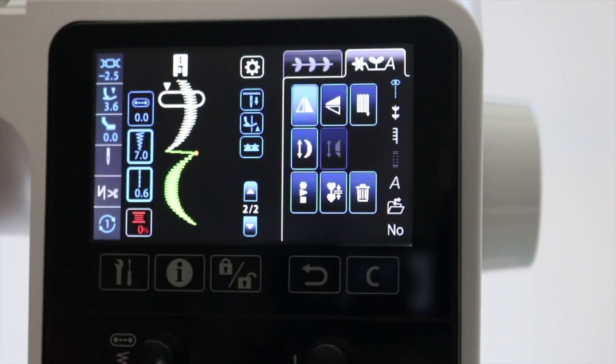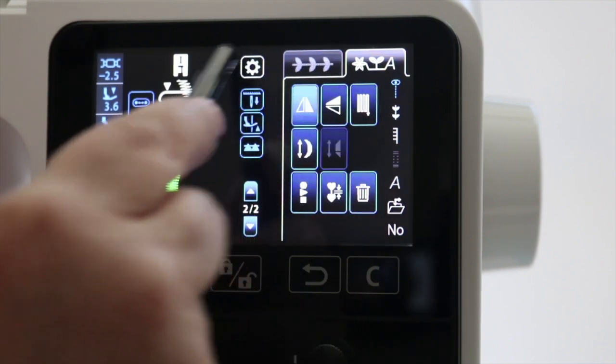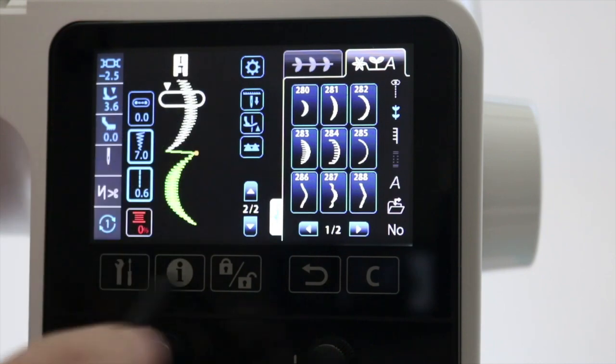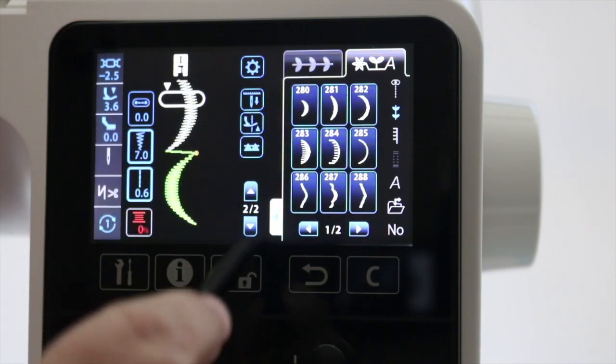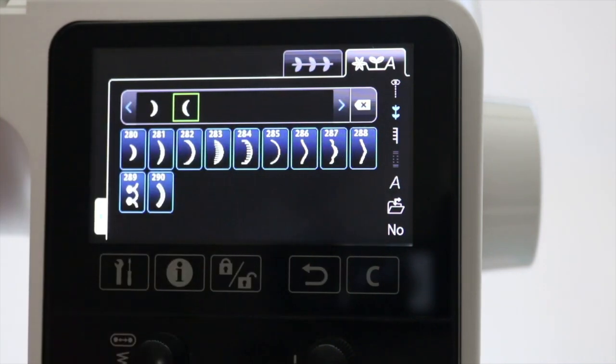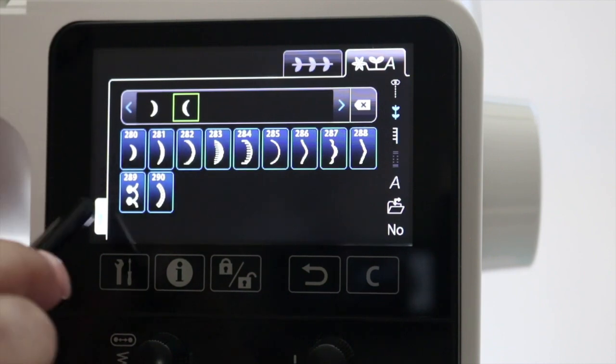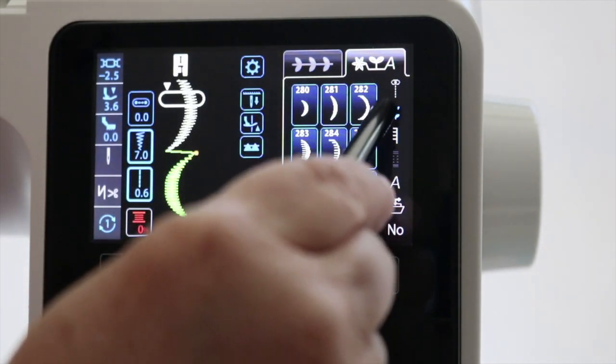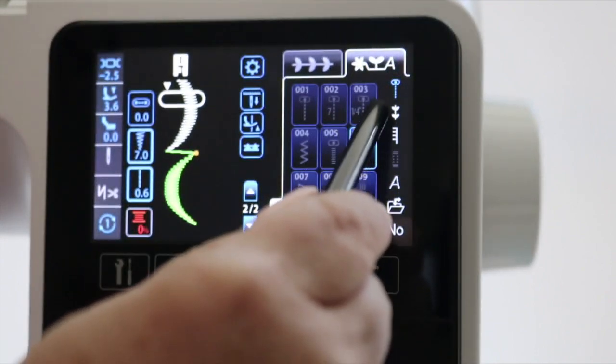Maybe I want to add a different stitch to that. I'm going to close the settings menu so I can get back to my stitches. If I touch the arrow here now, you'll see at the top it's showing me the stitches that I have in my sequence that I'm creating. I'm going to close that back up because I want to go get some different stitches this time.